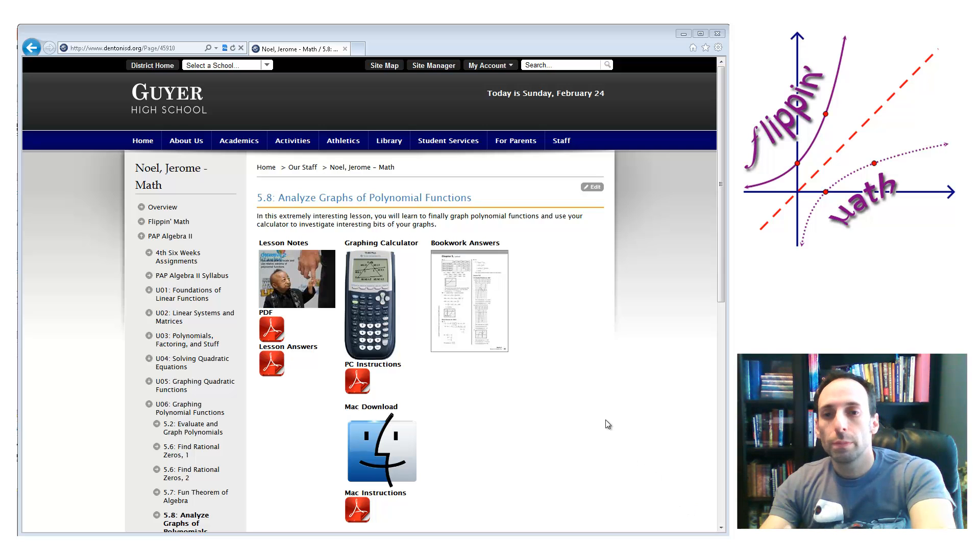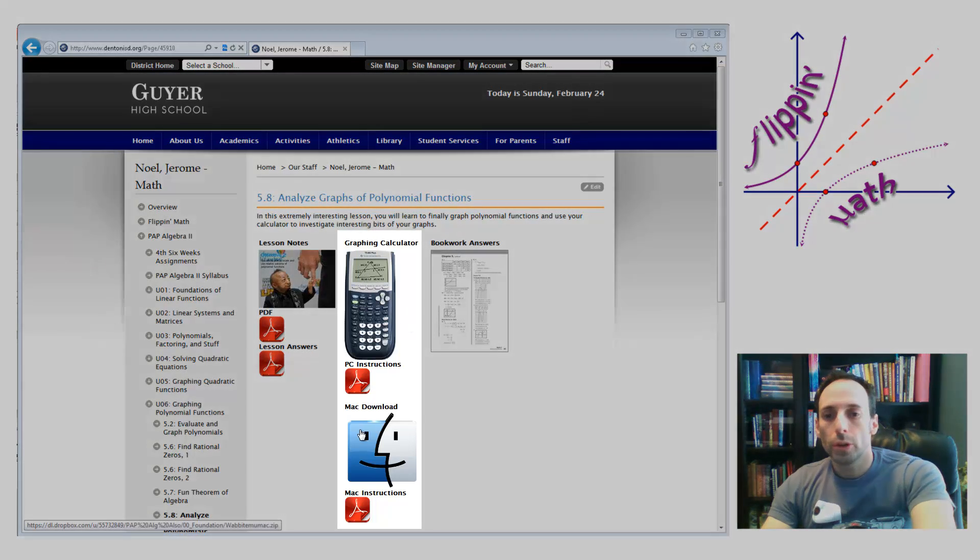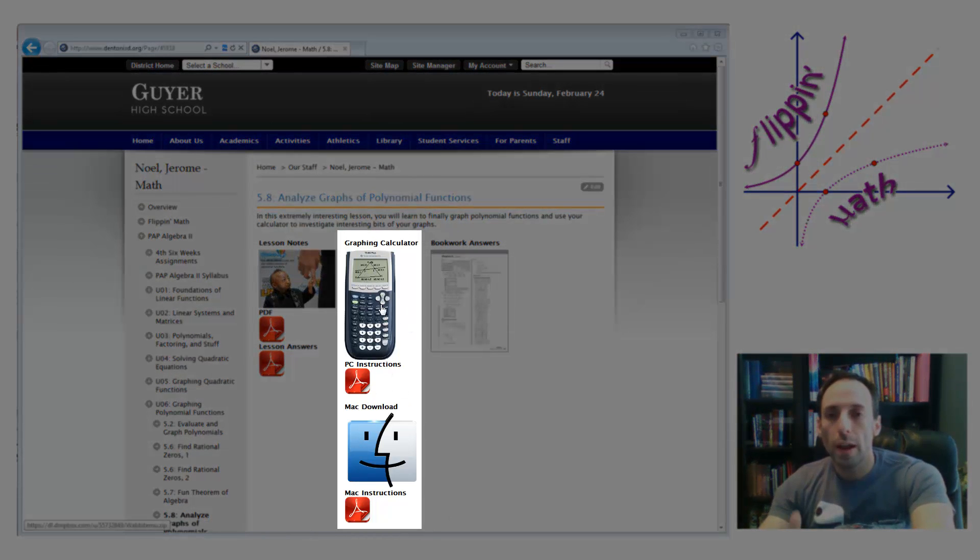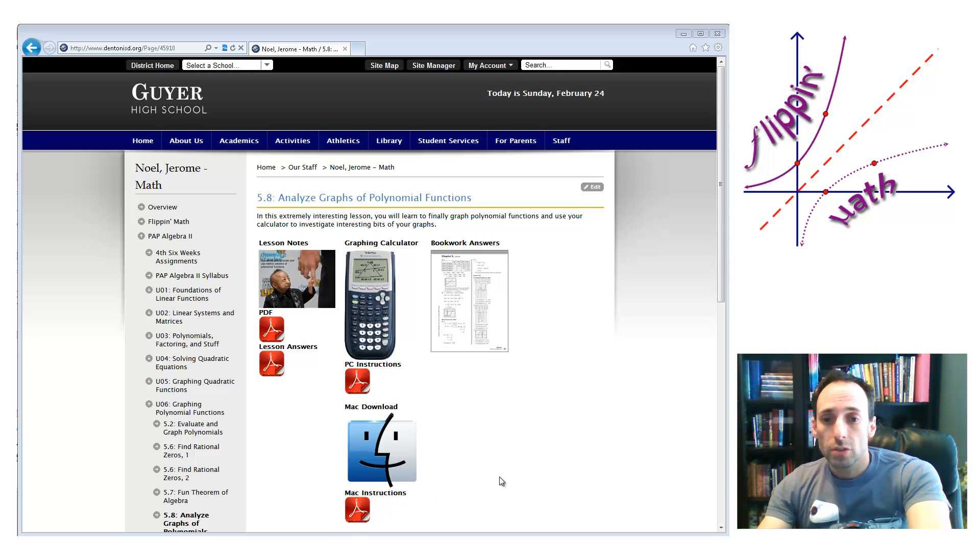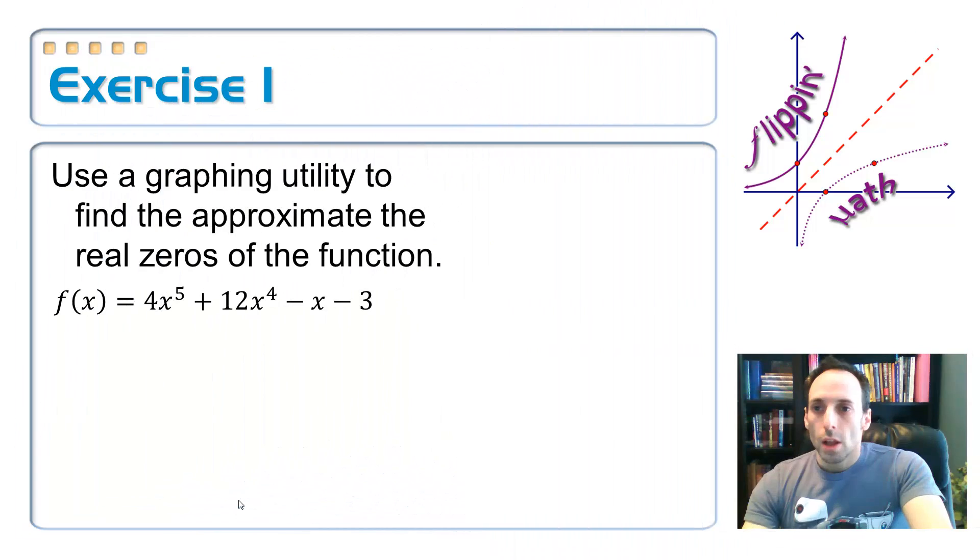we're on lesson 5.8, so if you navigate to that part of the website, right down the middle here, here's a whole bunch of graphic calculator stuff. So if you have a PC, click on the picture of the graphing calculator. There's some instructions on how to open that thing up on your PC. If you have a Mac, then click the big old smiley face Mac icon and the Mac instructions are right down below. Open that thing up and then you'll have yourself a nice graphing calculator to do the rest of this lesson.